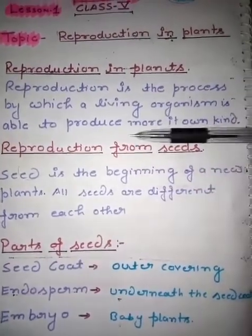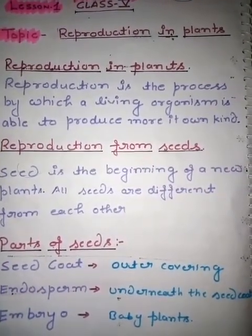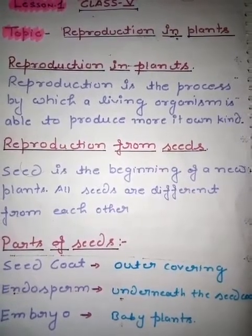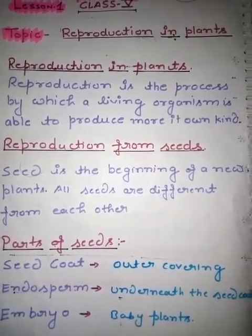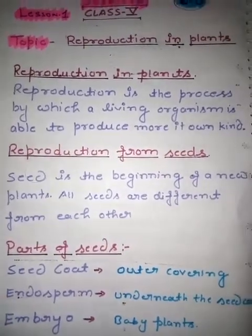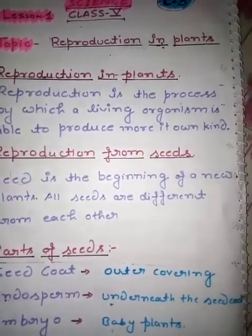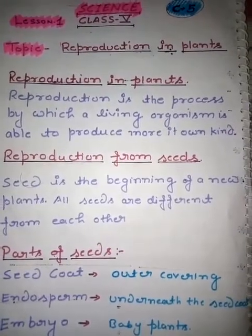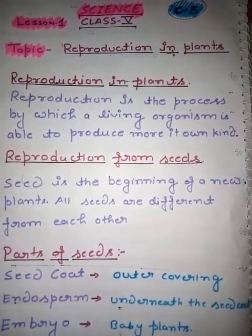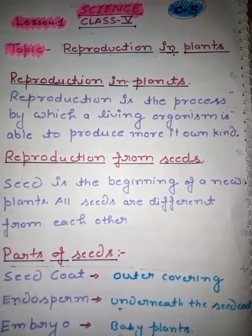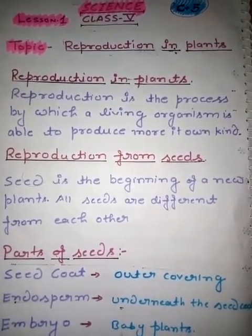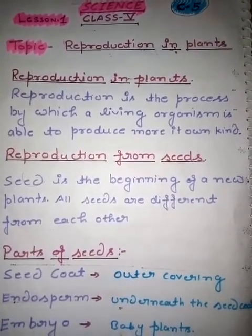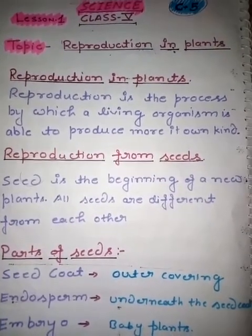Next is endosperm. Endosperm kya hota hai? Endosperm jo hota hai woh ek tarika ka layer hai underneath the seed coat. Yeh baby plants ko support karta hai — usse seedling mein aur young plant mein turn karta hai.